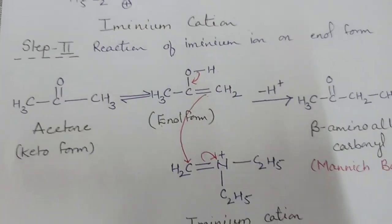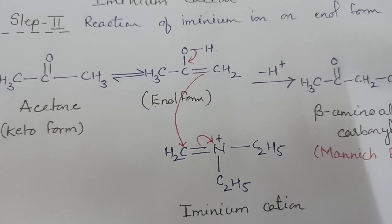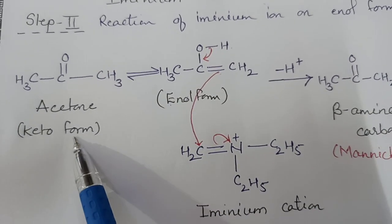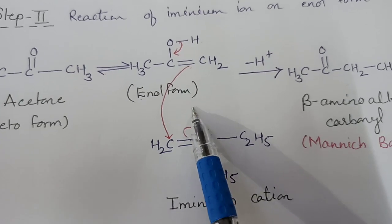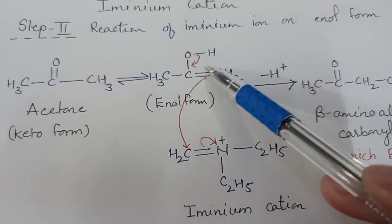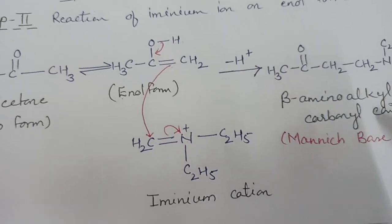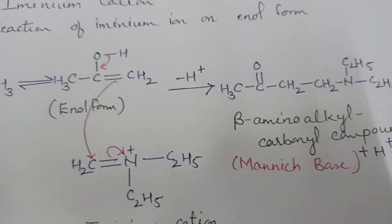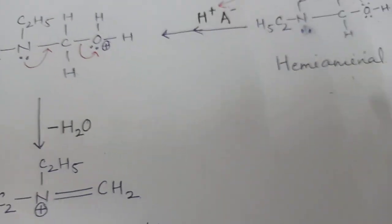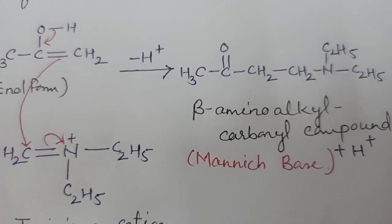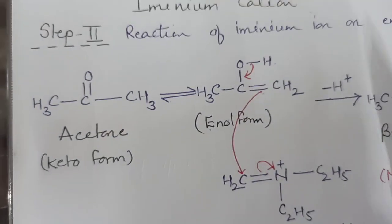The second step is the reaction of the iminium ion with the enol form of the enolizable carbonyl compound. Here, for example, we are taking acetone. This is the keto form of acetone and this is the enol form. The enol form of acetone reacts with the iminium cation, removes the hydroxyl proton, and is converted into the beta-aminoalkyl carbonyl compound — the Mannich base — releasing H+. Since in the first step the hemiaminal accepts a proton from the catalyst, and in the last step it releases H+, the acid acts as catalyst.